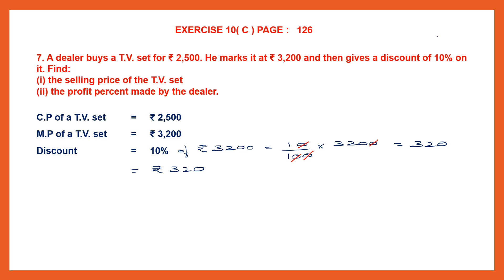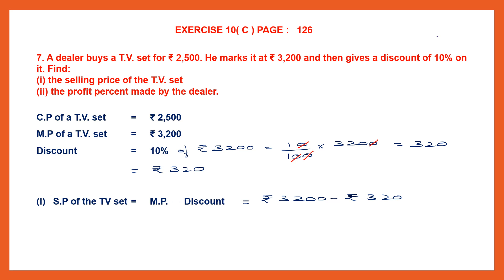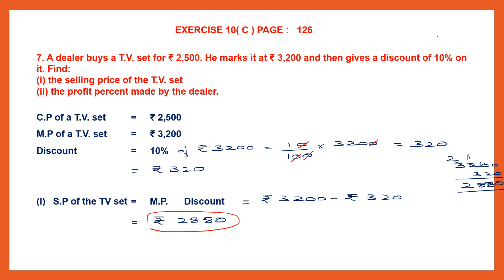Now with the help of the discount we can find the selling price. Selling price of the TV set: the formula is marked price minus discount. Marked price is Rs. 3,200, minus the discount which is Rs. 320. So 3,200 minus 320 — borrowing as needed — gives us 2,880. So the selling price of the TV set is Rs. 2,880. This is the answer to the first question.